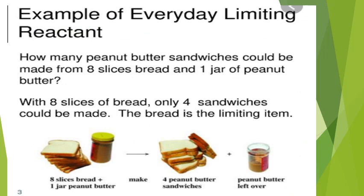An everyday example helps define the limiting reactant. Consider a jar of peanut butter and 18 slices of bread. Using two slices per sandwich, you can make a total of four peanut butter sandwiches, and peanut butter will be left over. The bread slices act as the limiting reactant — all consumed — while the peanut butter is the excess reactant, remaining after the sandwiches are made.